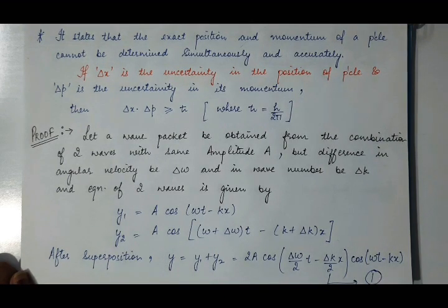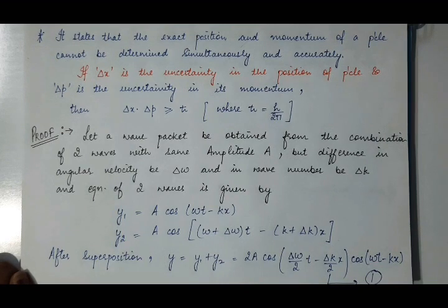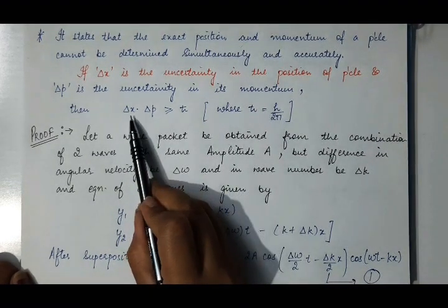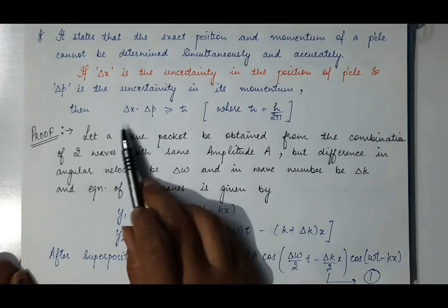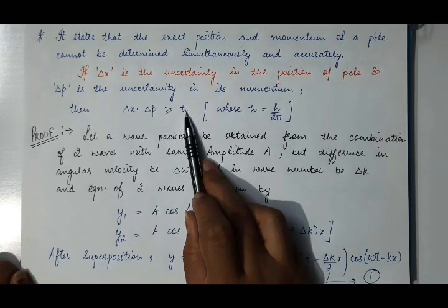So Heisenberg states that according to this uncertainty principle, the exact position and the momentum of a microscopic particle cannot be determined simultaneously and accurately. There will always be uncertainty in the position as well as in the momentum of the particle. If delta x is the uncertainty in position and delta p is the uncertainty in momentum, then the product of these two uncertainties will always be greater than h-bar (ℏ = h/2π).